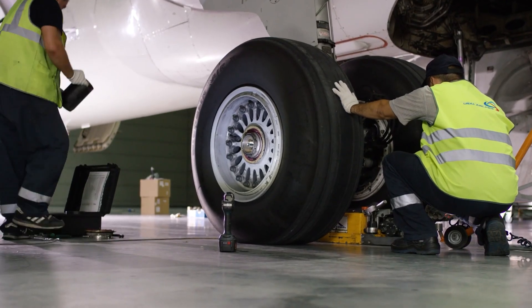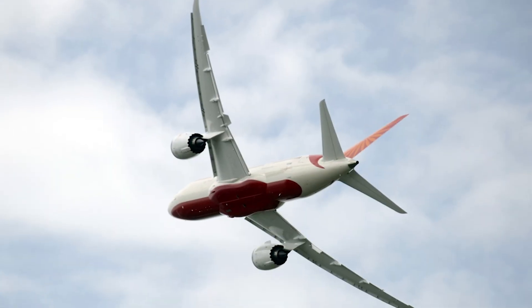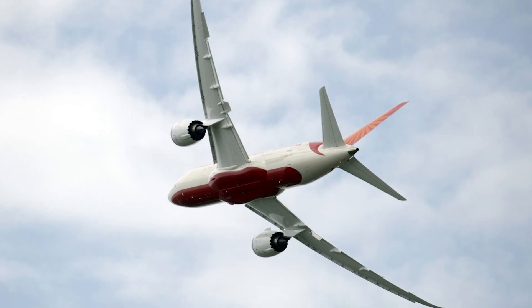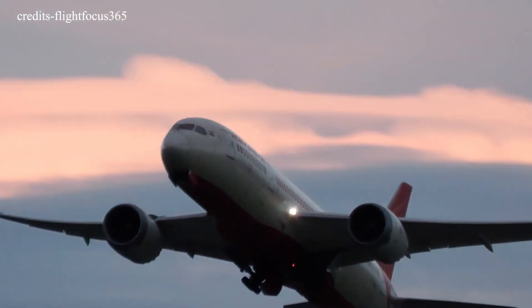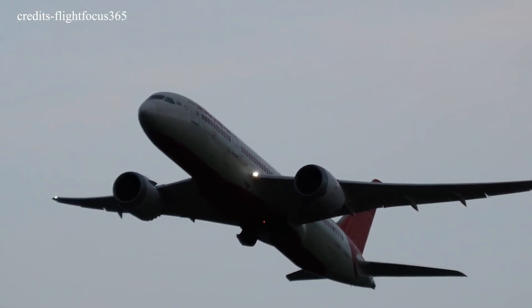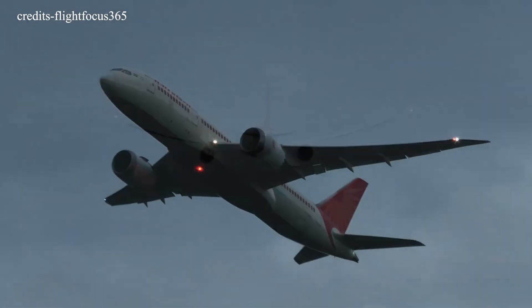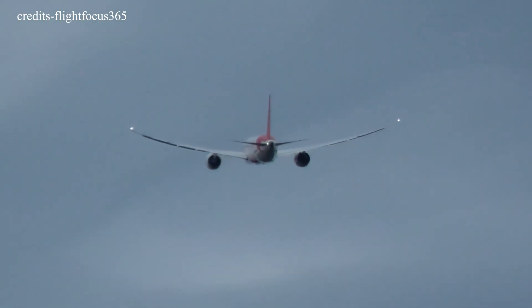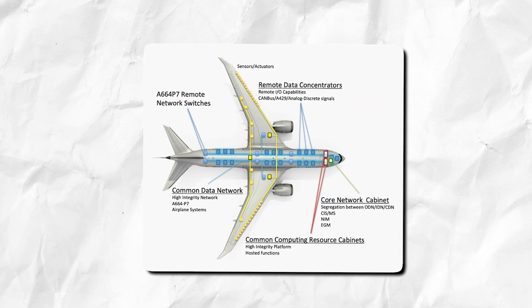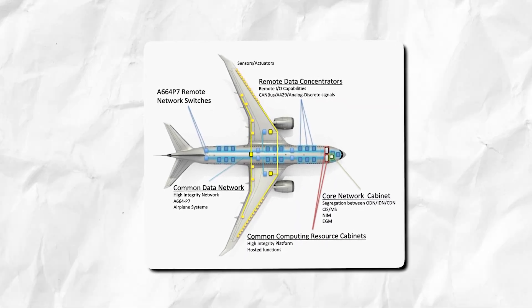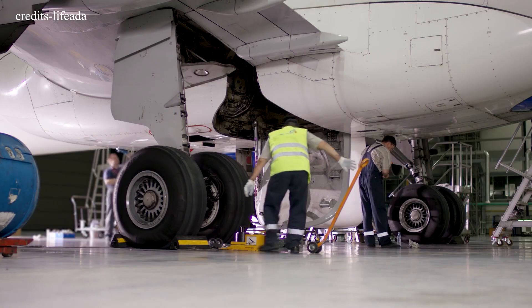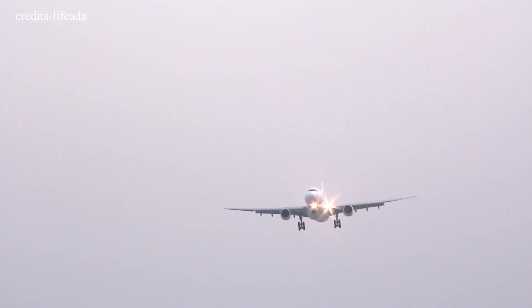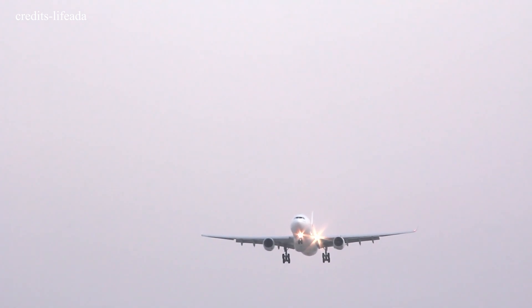Before delving further into the data, let's debunk a few early misconceptions. One widely circulated theory claimed the flaps weren't properly configured — this has now been disproven. The flaps were correctly set to position 5, one of two standard takeoff settings on the 787, the other being flaps 15. With flaps 5, both slats and trailing edge flaps extended, but the downward deflection is subtle, making it difficult to verify visually, especially on low-resolution footage. Modern aircraft, particularly the Boeing 787, include multiple electronic safeguards that would alert the pilots if flaps were improperly set.